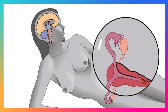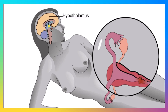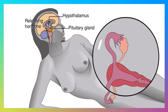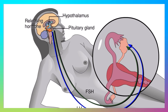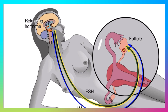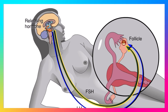While a woman is menstruating, her hypothalamus begins secreting a releasing hormone, which stimulates the anterior pituitary to secrete FSH and LH into the blood. FSH, follicle-stimulating hormone, stimulates the growth of an ovarian follicle in the ovary.